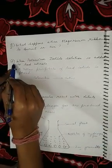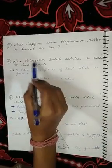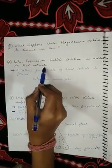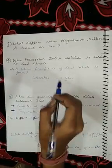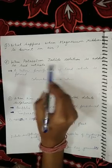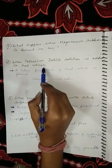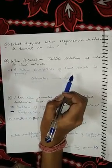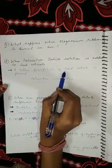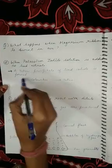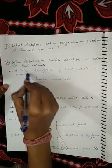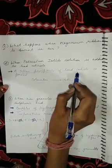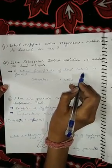The second activity: when potassium iodide solution is added to lead nitrate, we get a yellow precipitate of lead iodide.